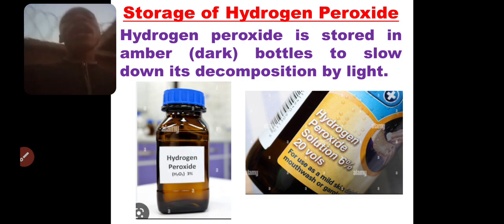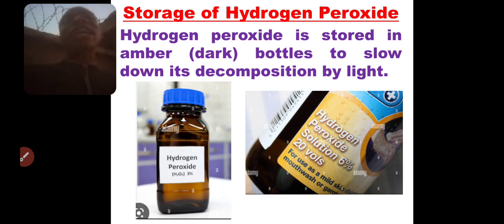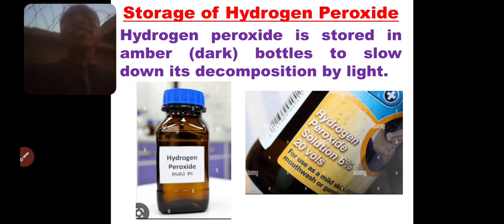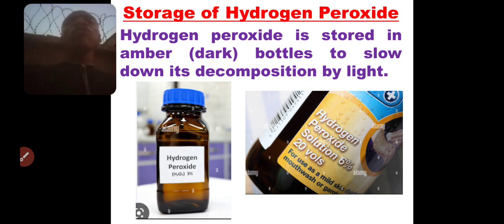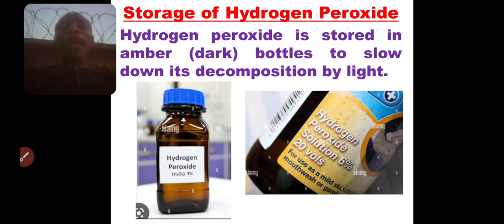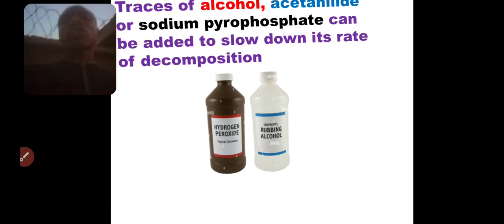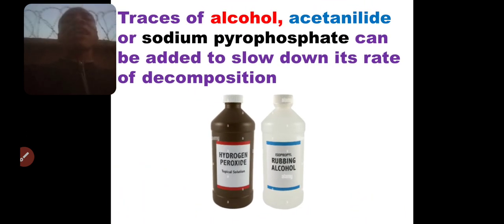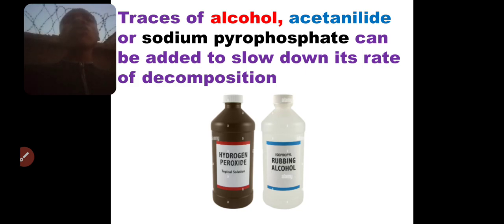How do we store hydrogen peroxide in the laboratory? We store it in a dark bottle or amber bottle to slow down its decomposition by light. H2O2 easily decomposes with light and also with heat, so storing it in a dark bottle prevents light from penetrating rapidly, slowing down the rate of decomposition. You can also add negative catalysts — those that slow down chemical reactions — like alcohol, acetanilide, or sodium pyrophosphate, to help slow down the rate of decomposition.